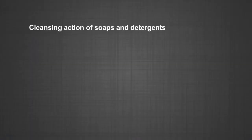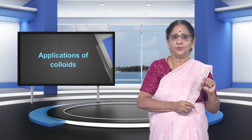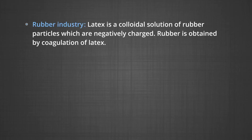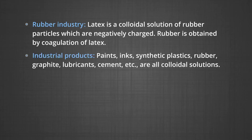Number five, cleansing action of soaps and detergents: this has already been described in module three. Number six, photographic plates and films: photographic plates or films are prepared by coating an emulsion of the light-sensitive silver bromide in gelatin over glass plates or celluloid films. Number seven, rubber industry: latex is a colloidal solution of rubber particles which are negatively charged. Rubber is obtained by coagulation of latex. Number eight, industrial products: paints, inks, synthetic plastics, rubber, graphite, lubricants, cement, etc. are all colloidal solutions.